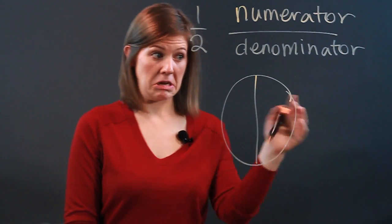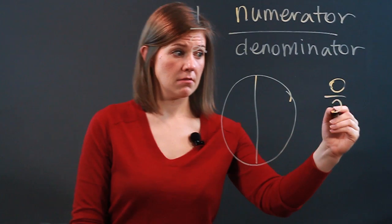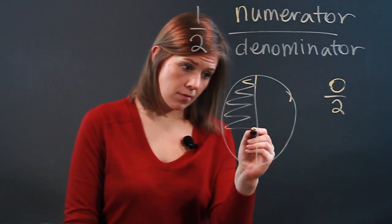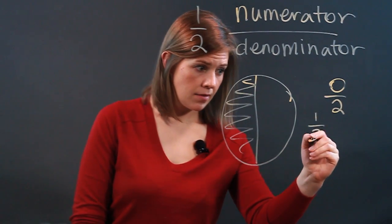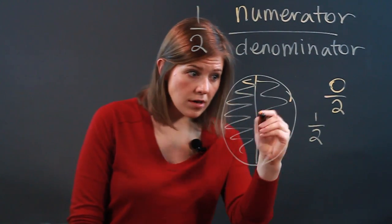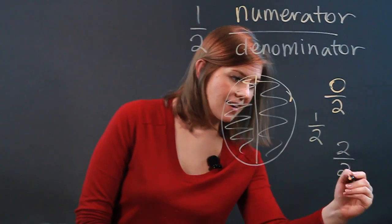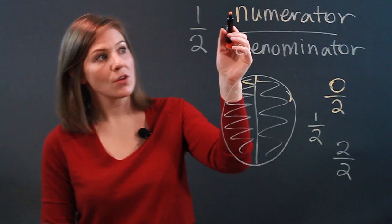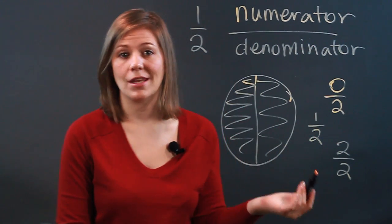We might have zero of those, or we might have one of those, or we might have two of those. In that case, the numerator is changing because the numerator shows us how many of those equal parts we get.